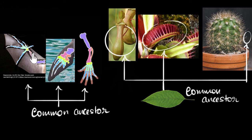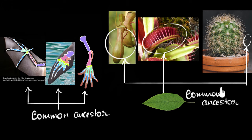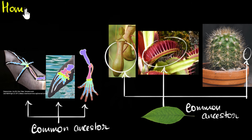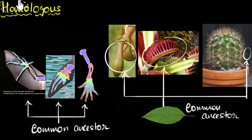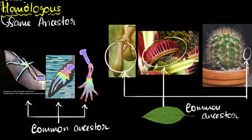Over here they perform flying and swimming, and our hands can do many things like scratching or climbing. Over here these are used for catching insects, and the spines are used as protection. So different functions, but same ancestry. Such structures, which have different functions but same ancestry, we call them homologous structures. The word 'homo' means same — same ancestors — but they can have different functions.